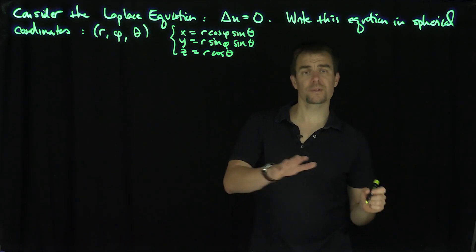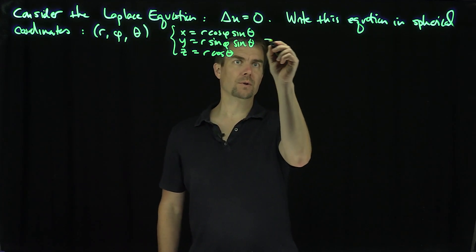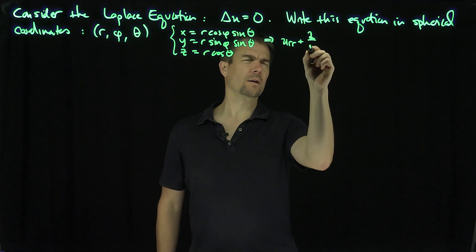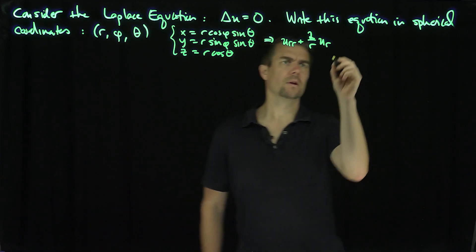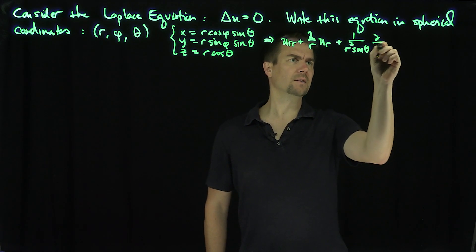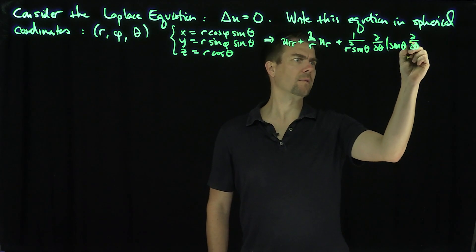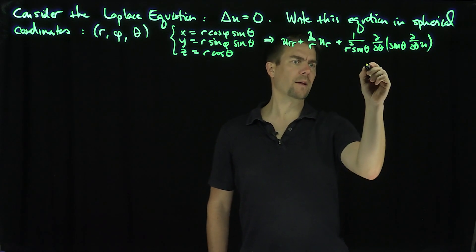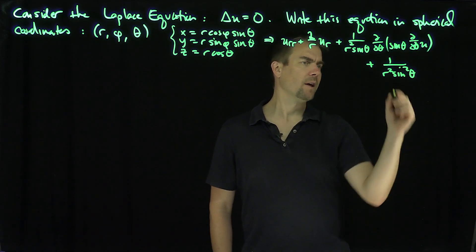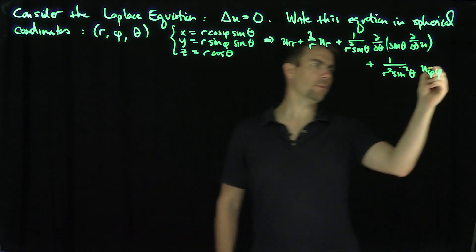In spherical coordinates, our Laplacian of u equals zero is equivalent to saying that u_rr plus (2/r)u_r plus (1/(r² sinθ)) d/dθ [sinθ · d/dθ u] plus (1/(r² sin²θ)) u_φφ equals zero.